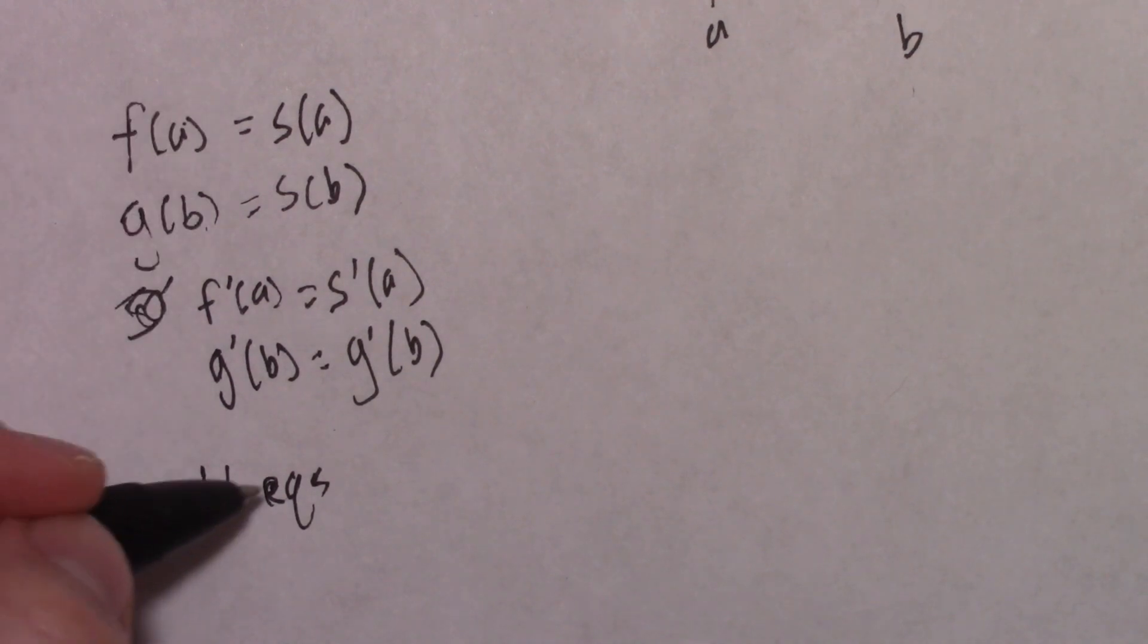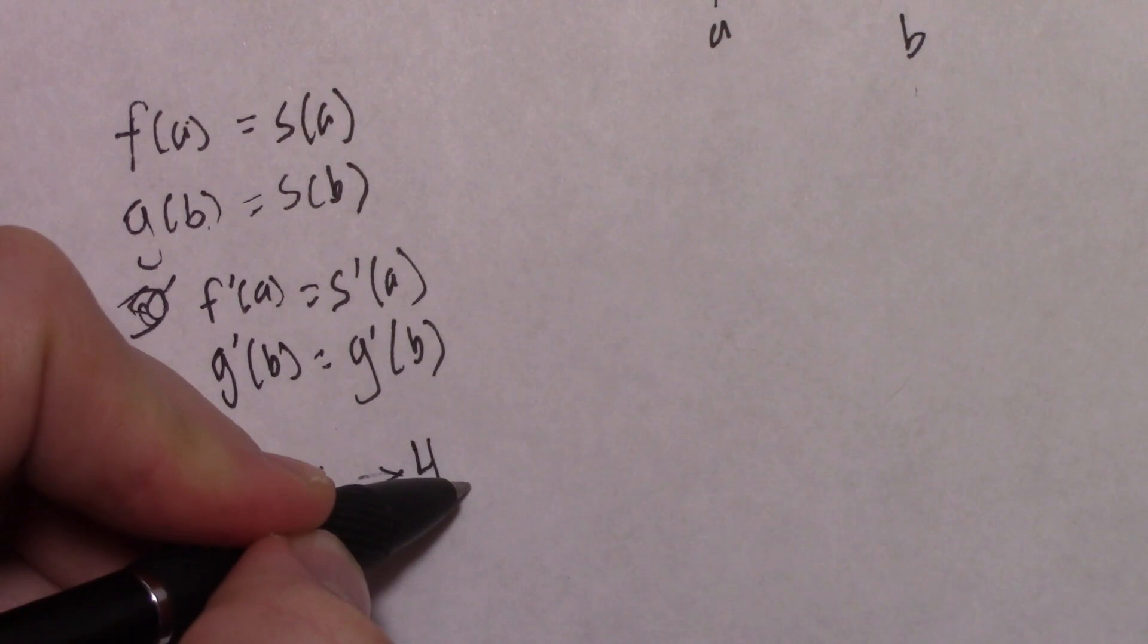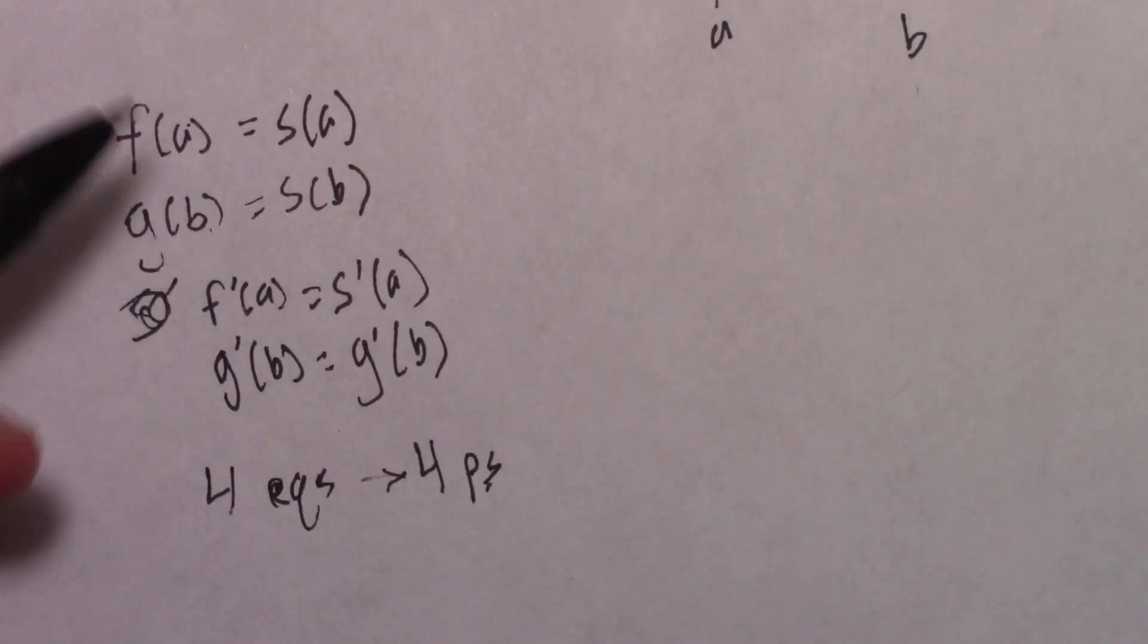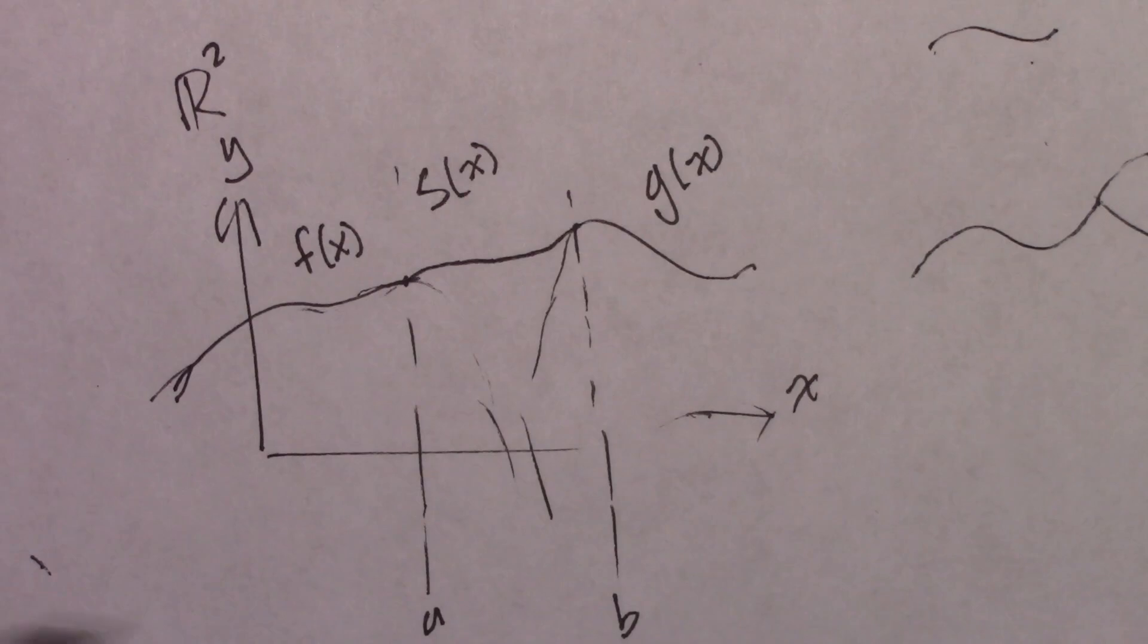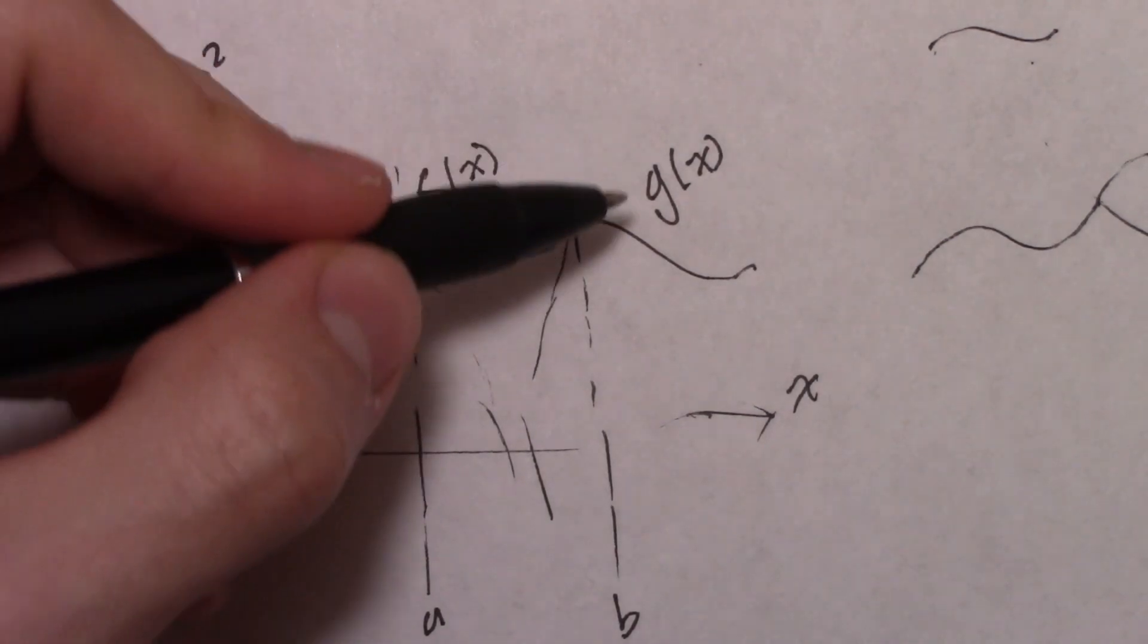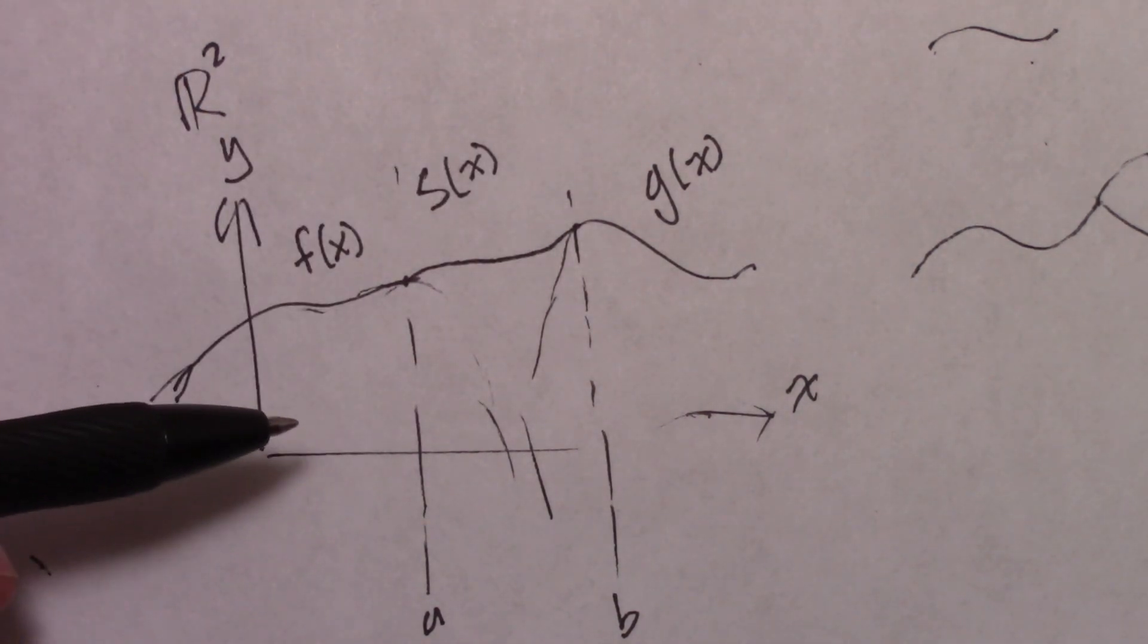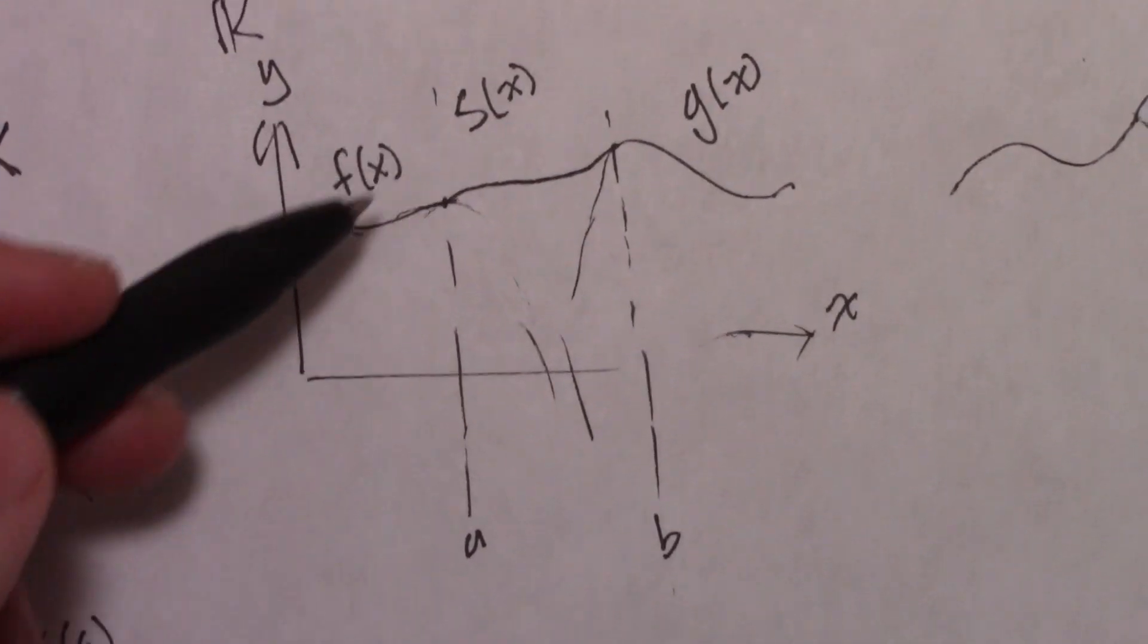So I'm just going to use prime notation to denote the derivative, which is the slope. So these are our constraints. With four equations, we're going to want four parameters to vary, because we need four degrees of freedom. We need to be able to twist the slope here, move the slope up and down, twist the slope here and move it up and down.